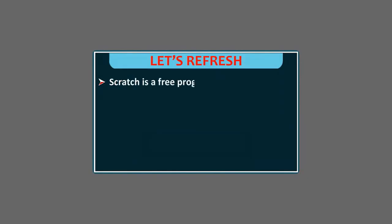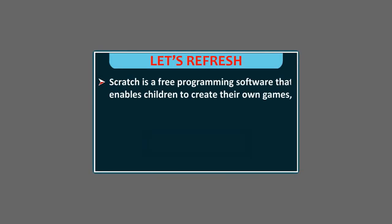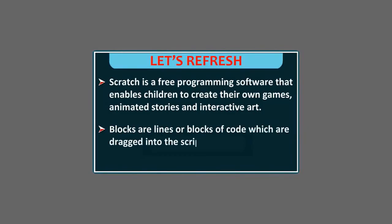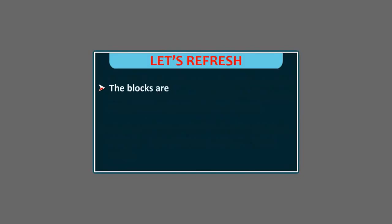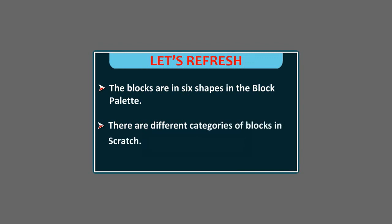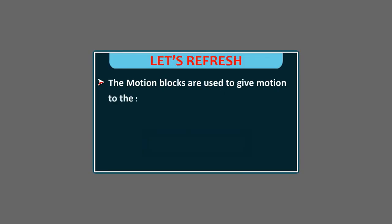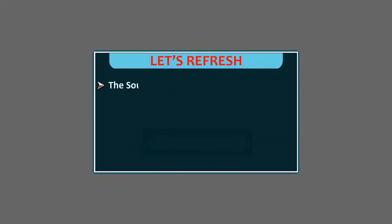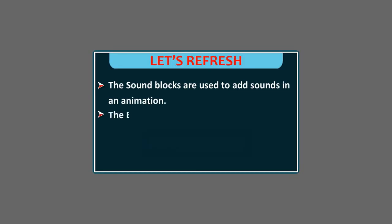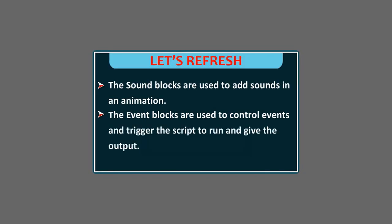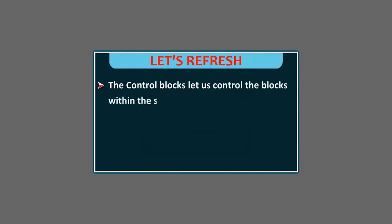Let's refresh. Scratch is a free programming software that enables children to create their own games, animated stories and interactive art. Blocks are lines or blocks of code which are dragged into the scripts area to create a script. The blocks are in 6 shapes in the block palette. Motion blocks give motion to sprites; looks blocks control the look, size and position of the sprite; sound blocks add sounds in an animation; event blocks control events and trigger the script; control blocks handle conditional statements, loops, repeats and pauses.